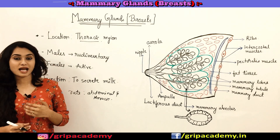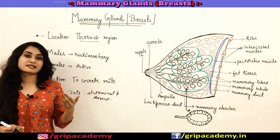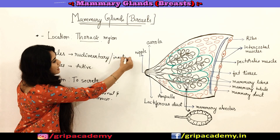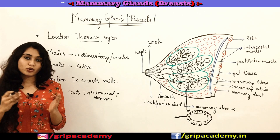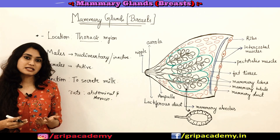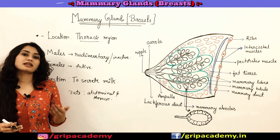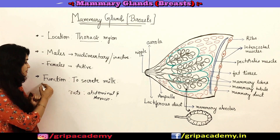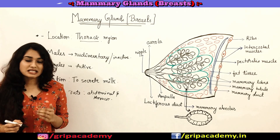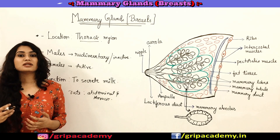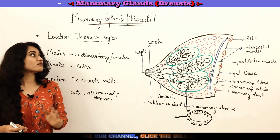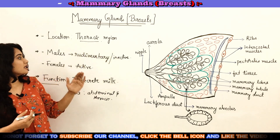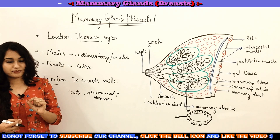Coming to activation in different genders: in males, the mammary glands are rudimentary or inactive. The mammary glands are present in both males and females, but in females they are active while in males they are inactive. The main function of the mammary gland is to secrete milk in order to nourish the newly born child. Its location is in the thoracic region — inactive in males, active in females.